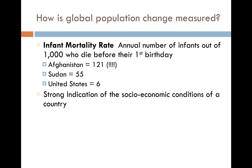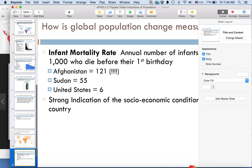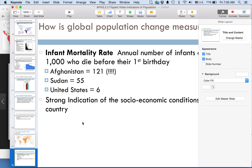The last statistic is infant mortality rate — the annual number of infants out of 1,000 who are born and die before their first birthday. Much like total fertility rate, infant mortality rate helps us understand the socioeconomic conditions of a country. The largest infant mortality rate in the world is Afghanistan at 121 — truly horrifying. Sudan is 55, and the United States is 6. These statistics can also fluctuate based on global events, as Afghanistan has faced tremendous conflict. Ultimately, this is an indication of access to prenatal health care — the level of medical care a woman receives while pregnant is the single most important factor dictating a child's health.